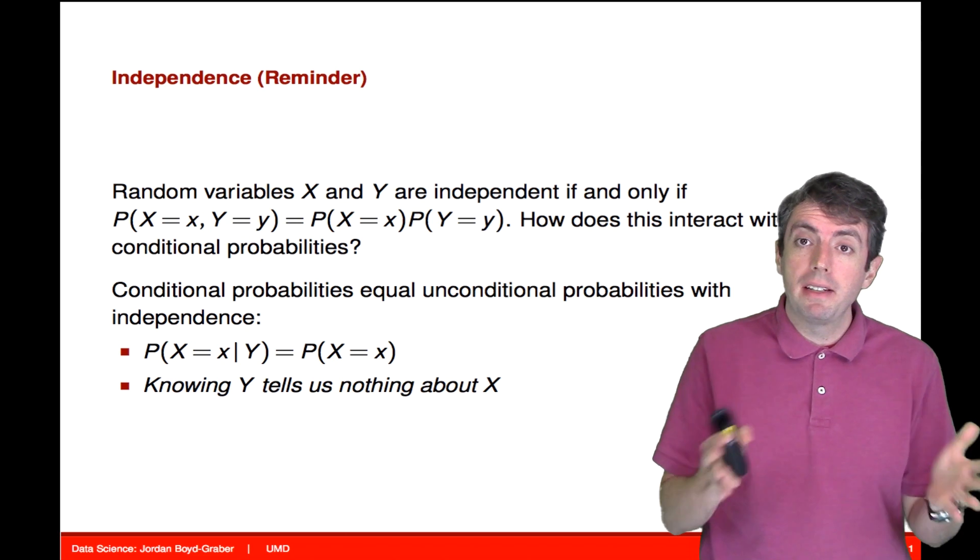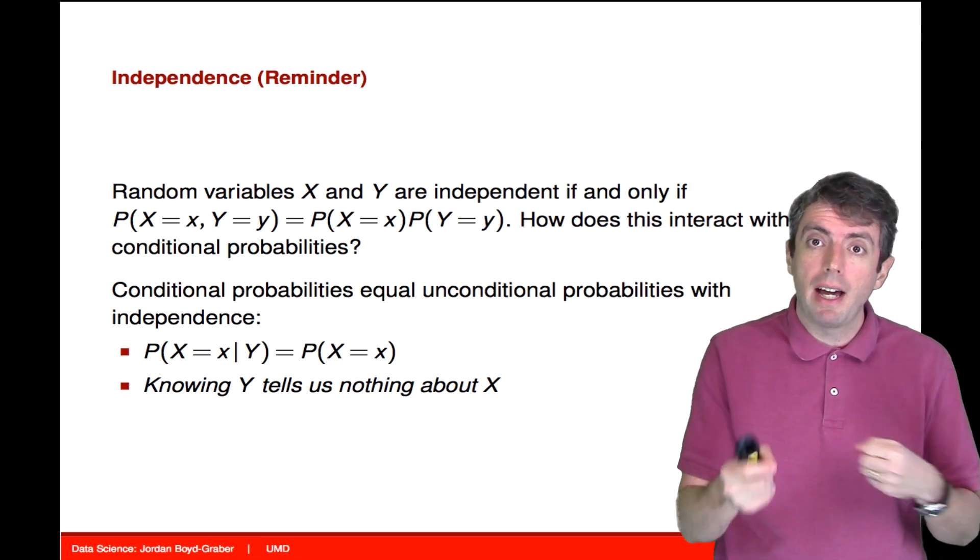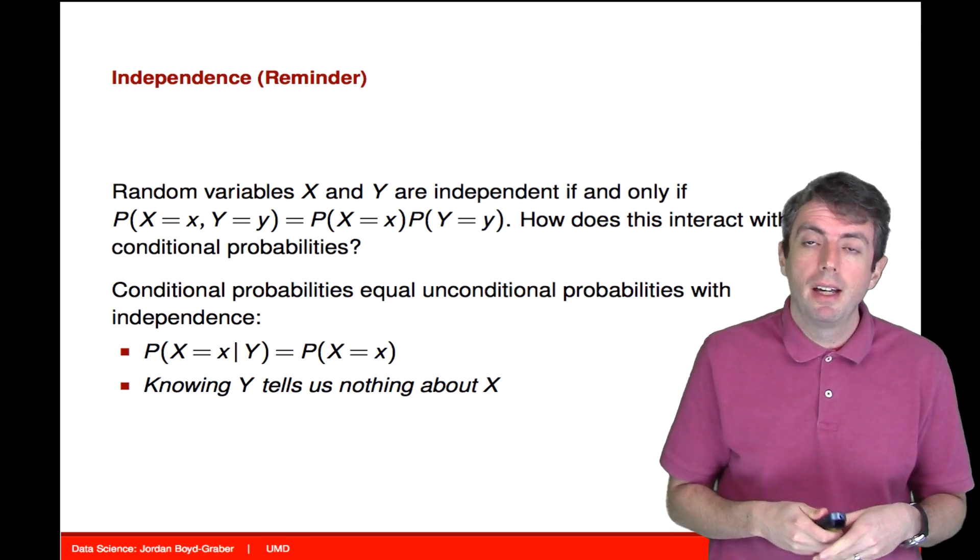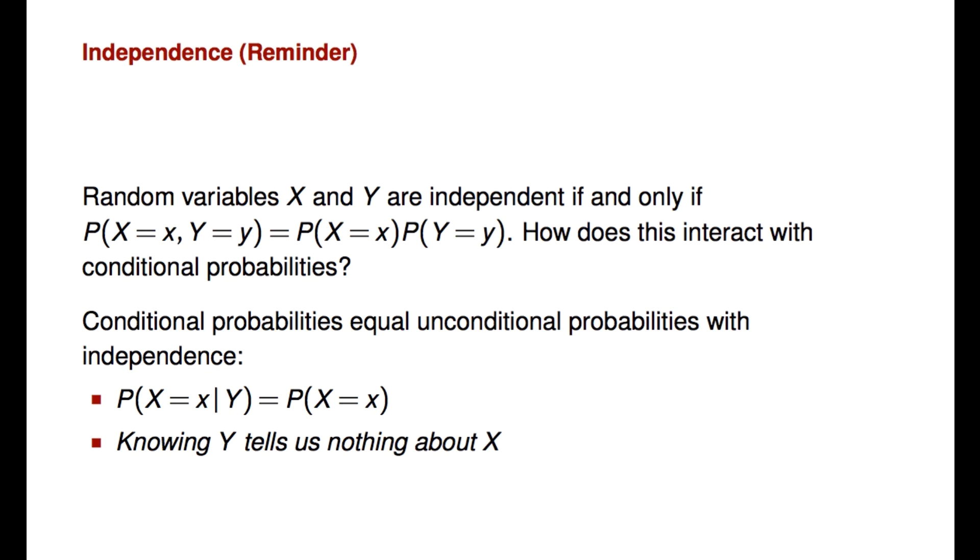So before we talked about independent probabilities, let's see how that relates to conditional probabilities. Recall that independent probabilities are probabilities where you can write the joint distribution as a product of marginals. If you have two independent probability distributions, and you condition on one of those distributions, that tells you no information.